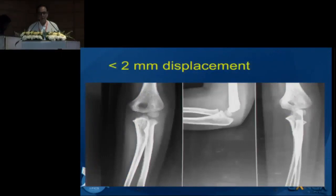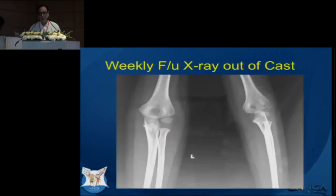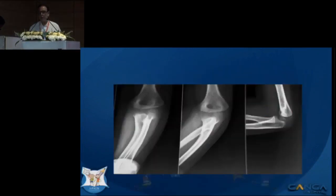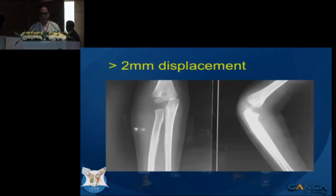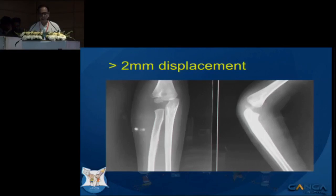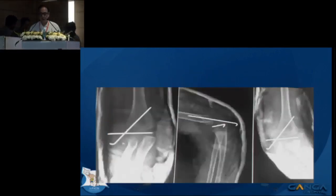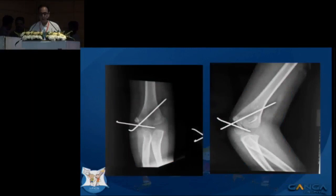Looking at some cases: this is a minimally displaced fracture on the day of injury, treated in a cast. About a week out, the fracture line looks slightly displaced but is more open laterally compared to the articular surface. This was observed and went on to heal without displacement. Another fracture looks minimally displaced on the AP projection, but on the internal oblique there is displacement. This was closed, reduced, and pinned, and went on to healing. There is a big lateral spike on follow-up, but this should remodel over time.